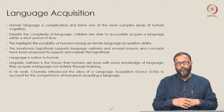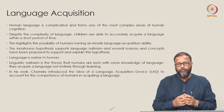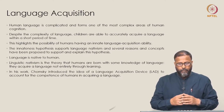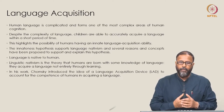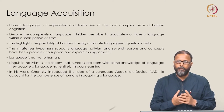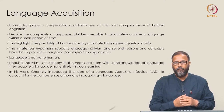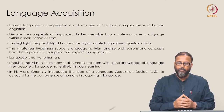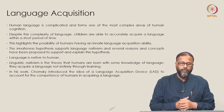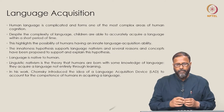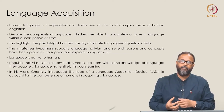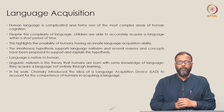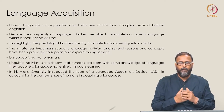If you look at the broad framework of generative paradigm and language acquisition within it, it says human language is complicated and forms one of the most complex areas of human cognition. Despite the complexity of language, children are able to accurately acquire a language within a short period of time. When we say accurately acquire a language, we have to refer to Chomsky's idea of linguistic competence, which gives you the idea of what it means to accurately acquire a language.